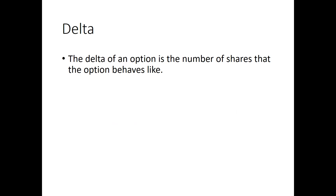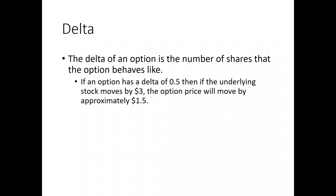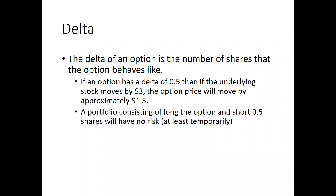The first place to start is the delta. The delta of an option is the number of shares that the option behaves like. For example, if an option has a delta of a half, then if the underlying stock moves by $3, the option price will move by approximately one and a half.